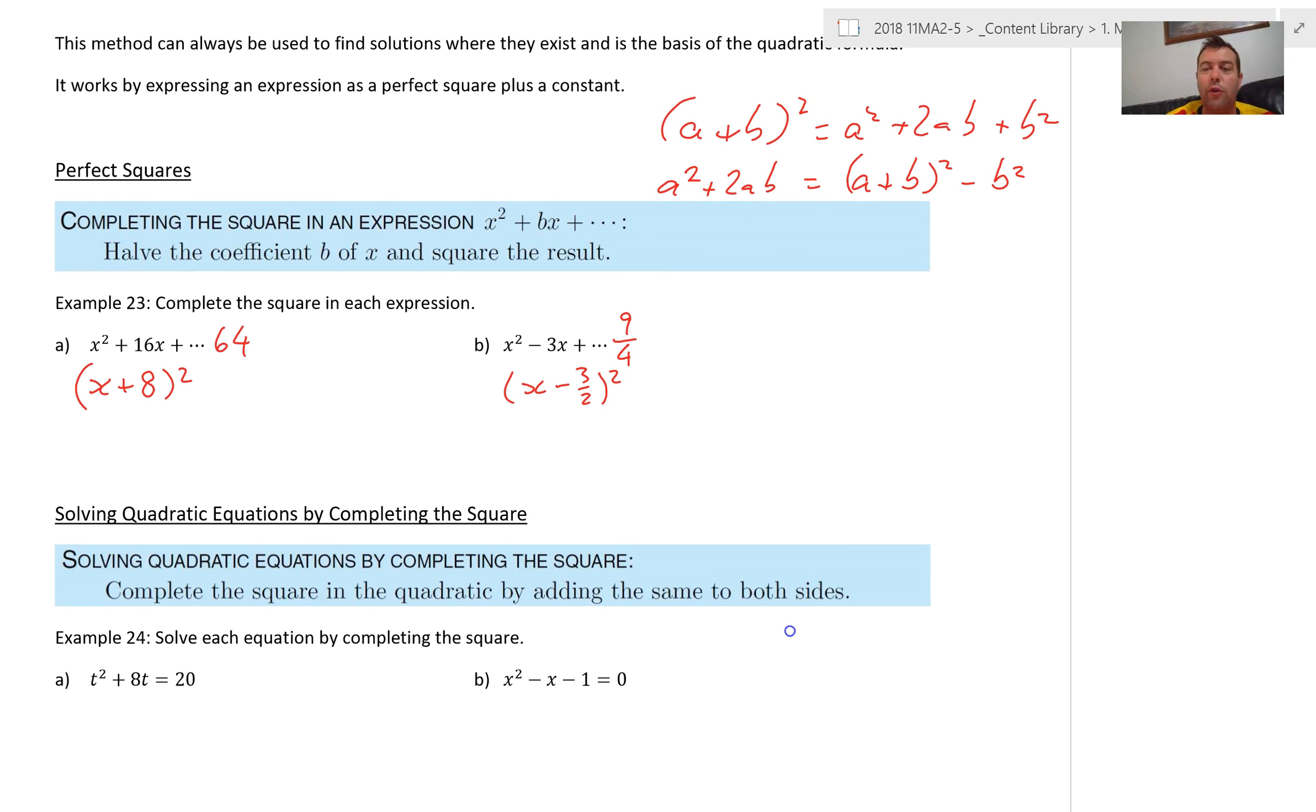We rely on this property that if I have a plus b all squared, we expand that and I get square the first, twice their product, square the last. Now let's look at this and say I take ab squared away from both sides, and I'm swapping left and right.